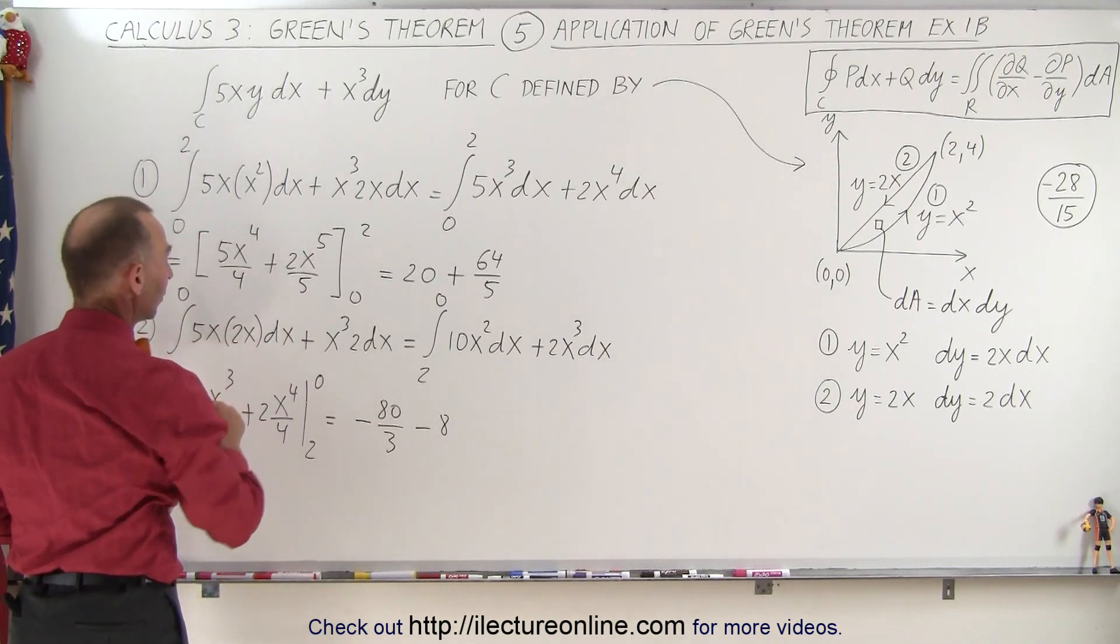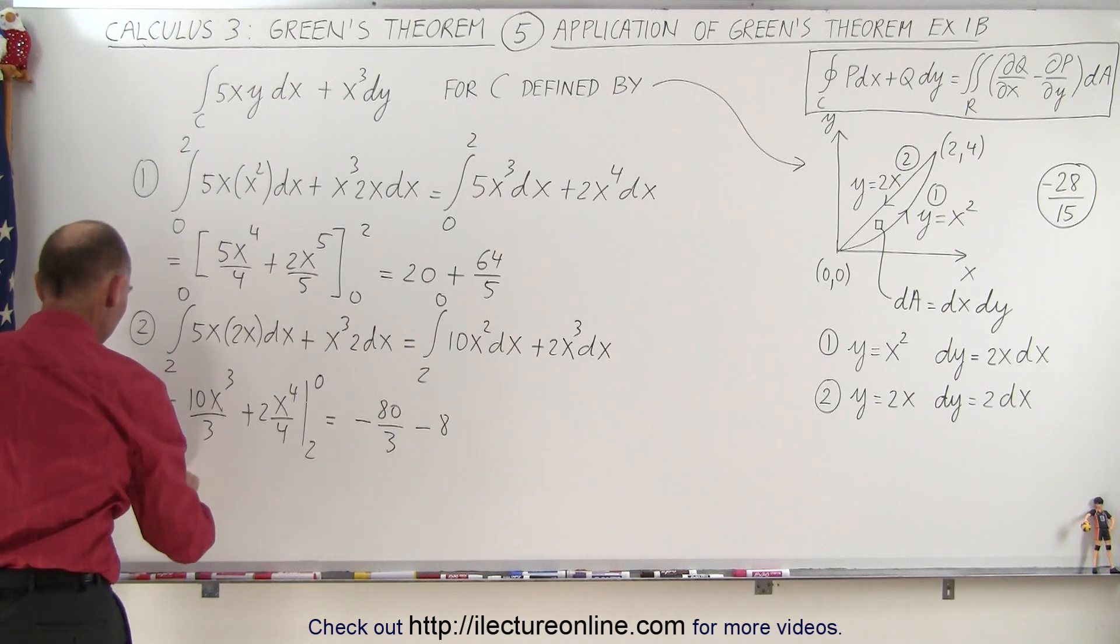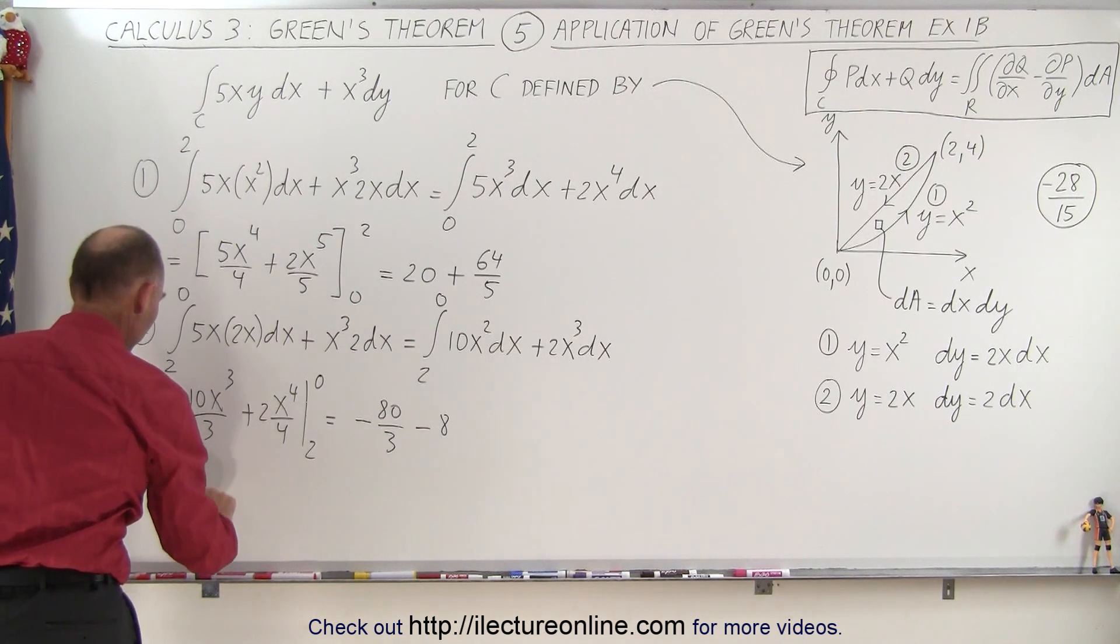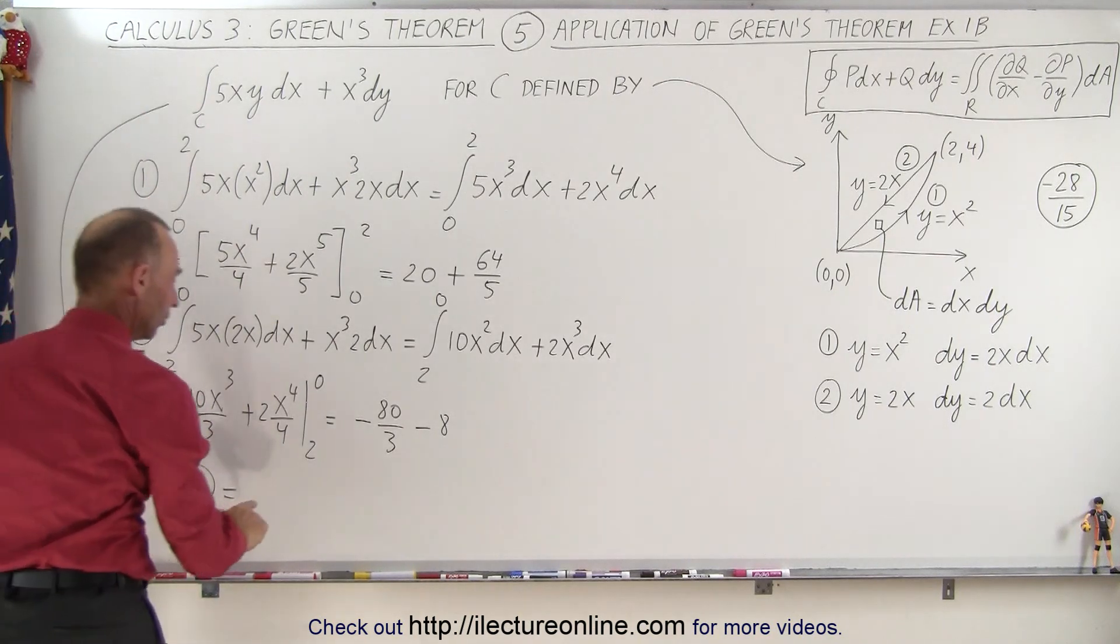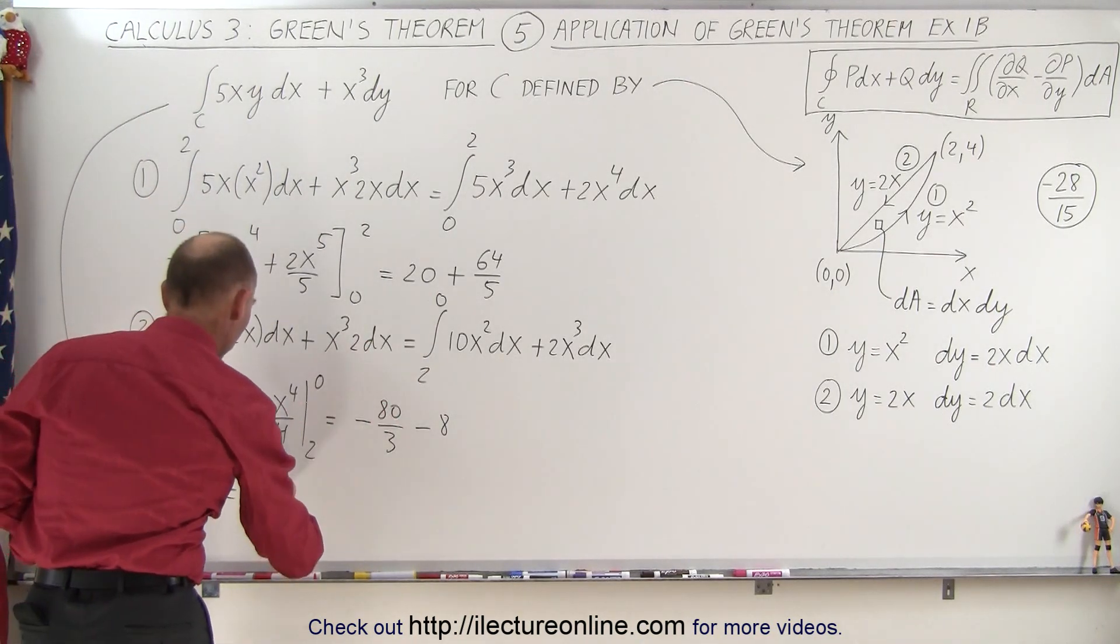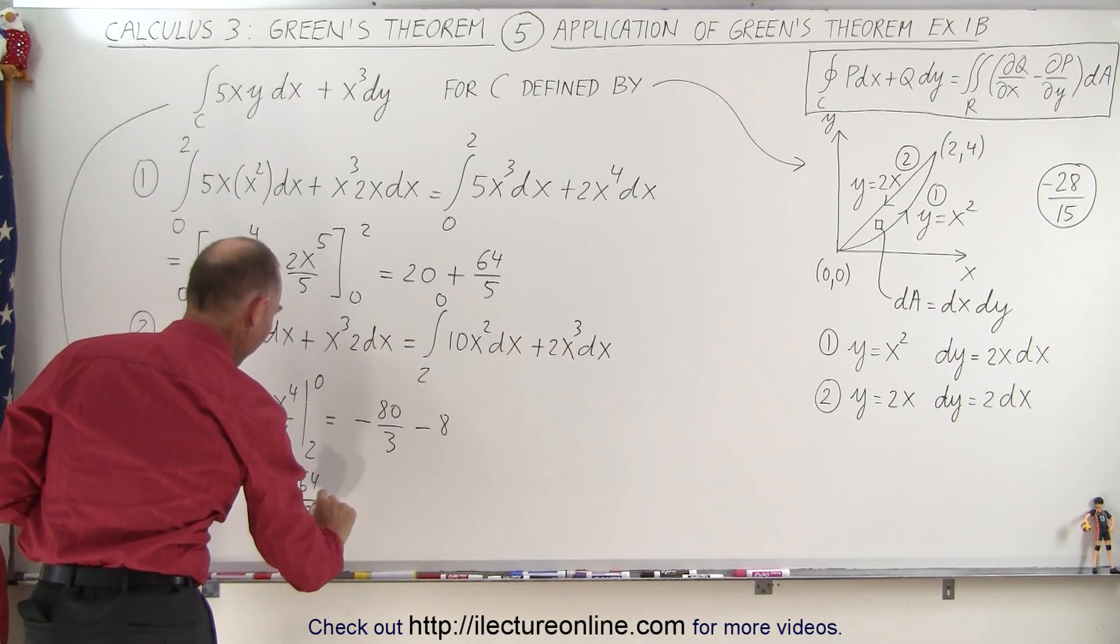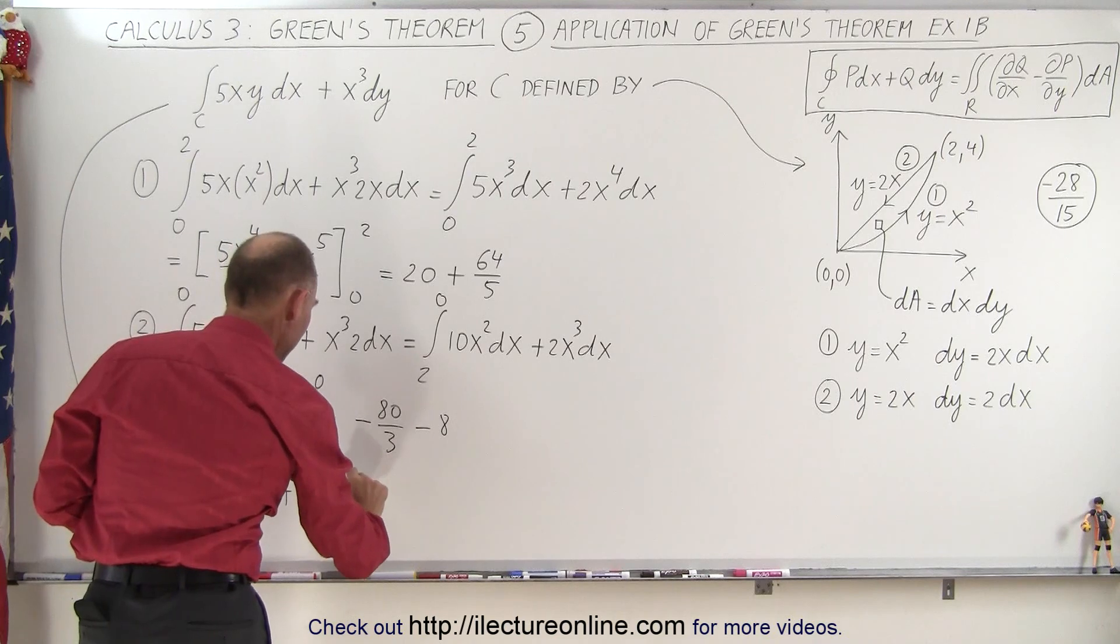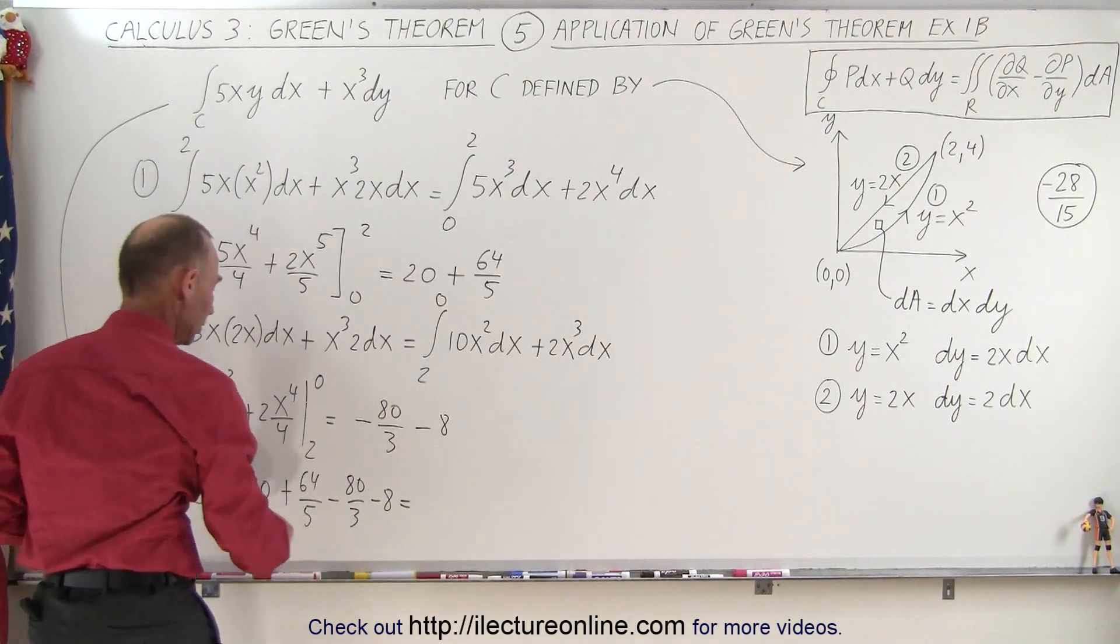Now what we have to do is the complete integral is going to be the sum of those 2. So we have the result of 1 plus the result of 2. This becomes equal to 20 plus 64 over 5 minus 80 over 3 minus 8.